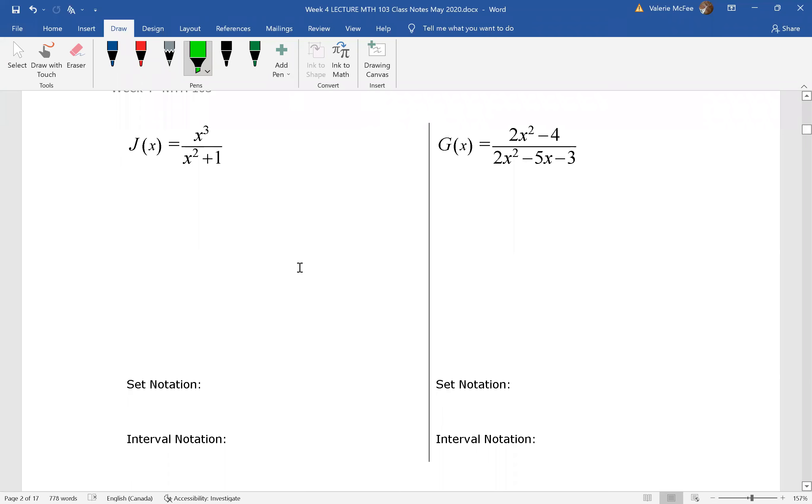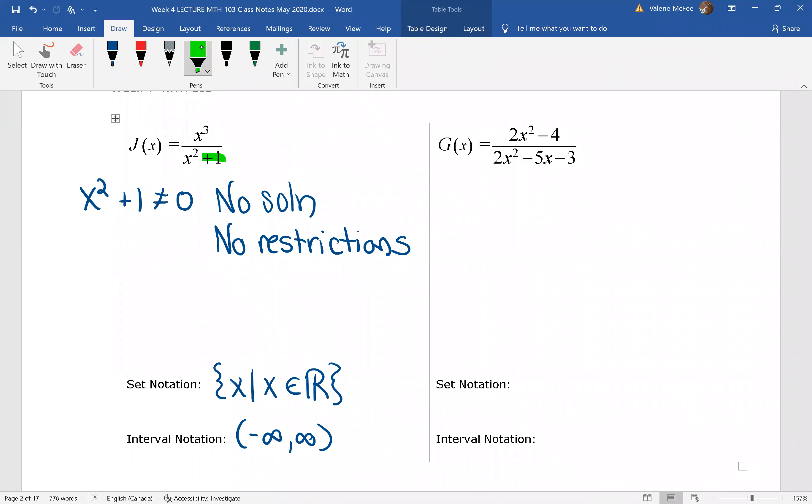Two more examples. Why don't you find the domain for J(x) and G(x). Again, we were looking at the denominator - the denominator cannot equal zero. But this was a sum of squares, not a difference of squares. It's never going to equal zero because x squared will never equal negative one. This means there are no restrictions, and the domain is the set of all real numbers.